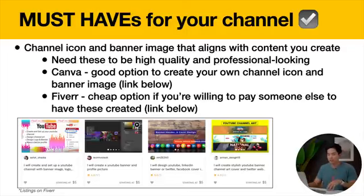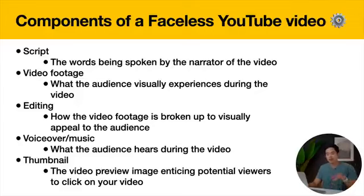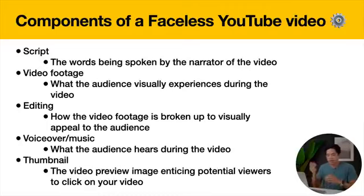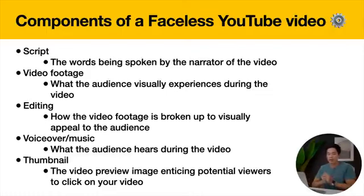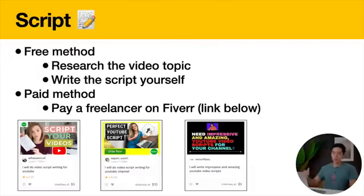Now let's talk about the components of a faceless YouTube video. This is broken into five different parts. The first is the script — the words being spoken by the narrator of the video. Next we have the video footage — what the audience is actually seeing when they watch the video. Third, we have the editing — how all the video footage, stock footage, and graphics are put together to visually appeal to the audience. I recommend most of you hire this out because editing takes a long time. Number four is the voiceover and music — what the audience hears during the video. And lastly, we have the thumbnail — the video preview image that's your clickbait. It's what people see along with the title, and its purpose is to draw people in.